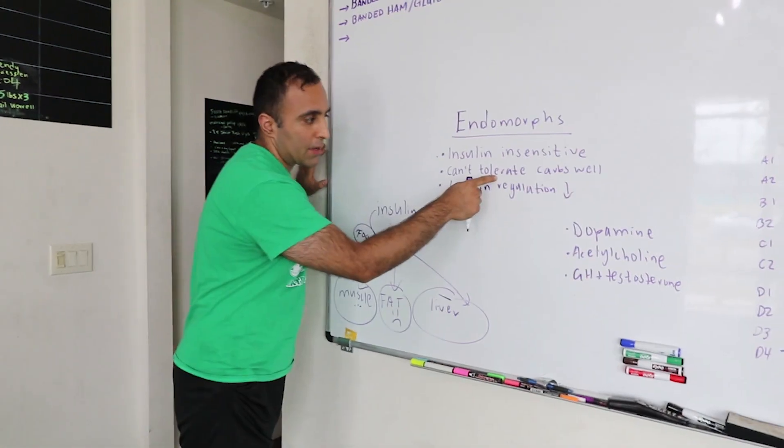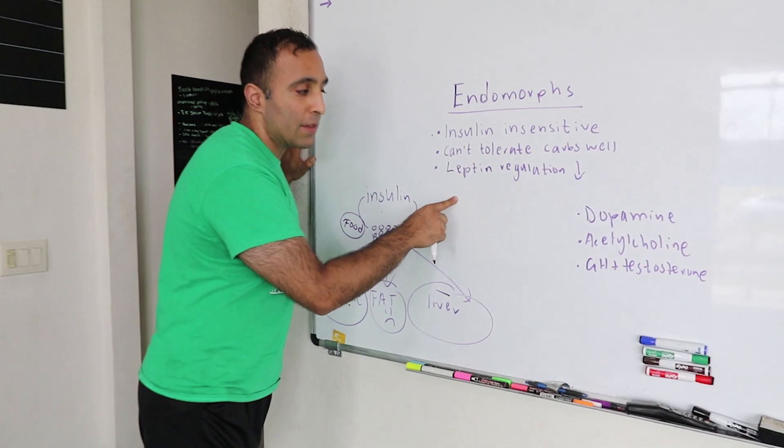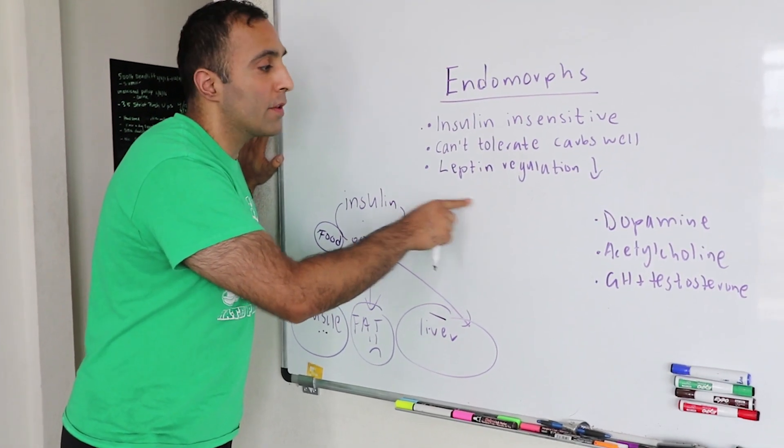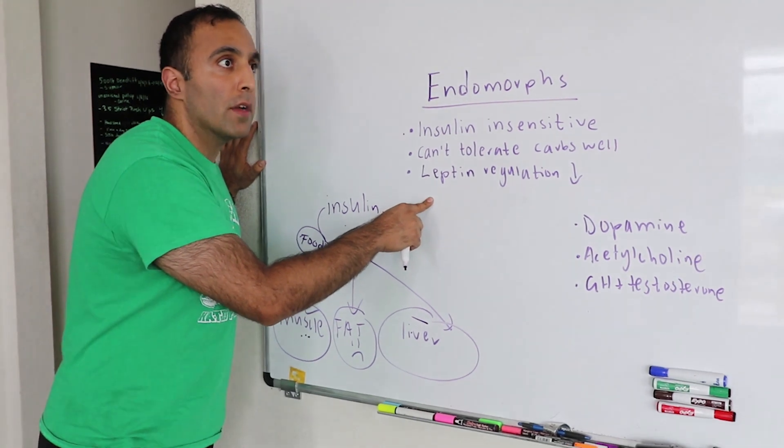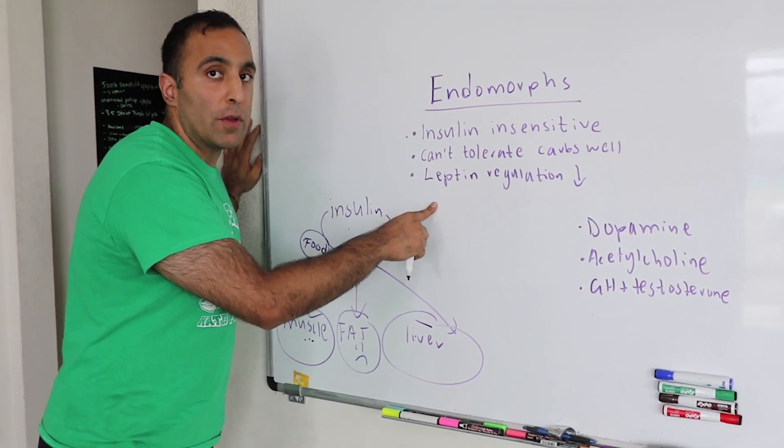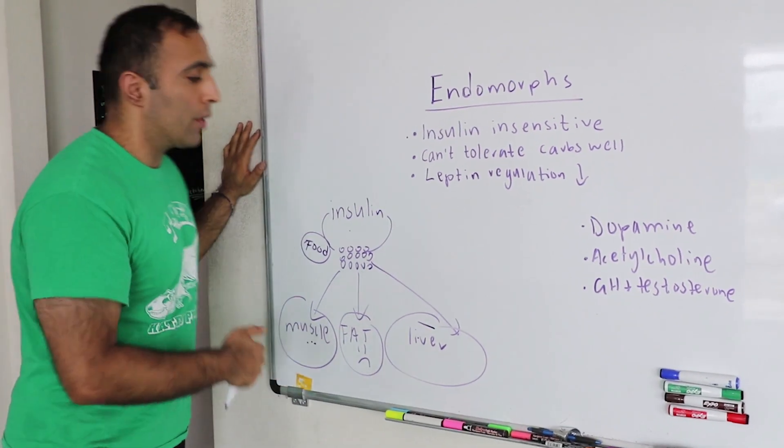They can't tolerate carbs as well as we talked about. Their leptin regulation is low. Leptin is a fat regulatory hormone, so it helps you regulate fat. Leptin is relatively low in these people unless you naturally spike it up with proper training methods and proper timing.